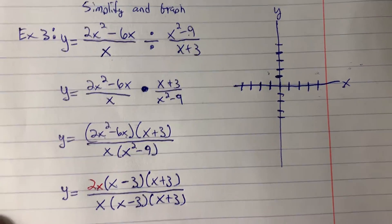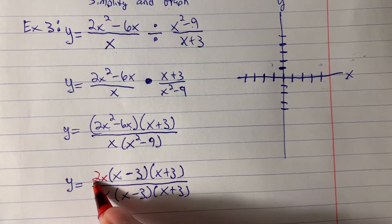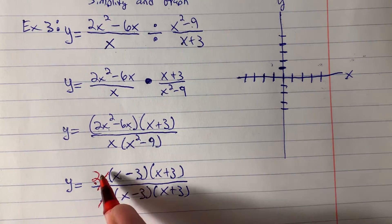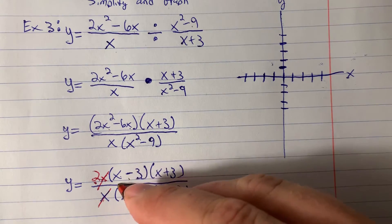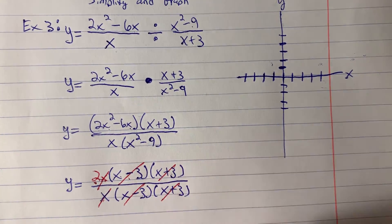And look how nice this is. We have all of these common factors in the numerator and the denominator. We're multiplying by x and dividing by x. That will cancel out. We're multiplying by x minus 3 and dividing by x minus 3. Those are inverses. We're multiplying by x plus 3 and dividing by x plus 3.